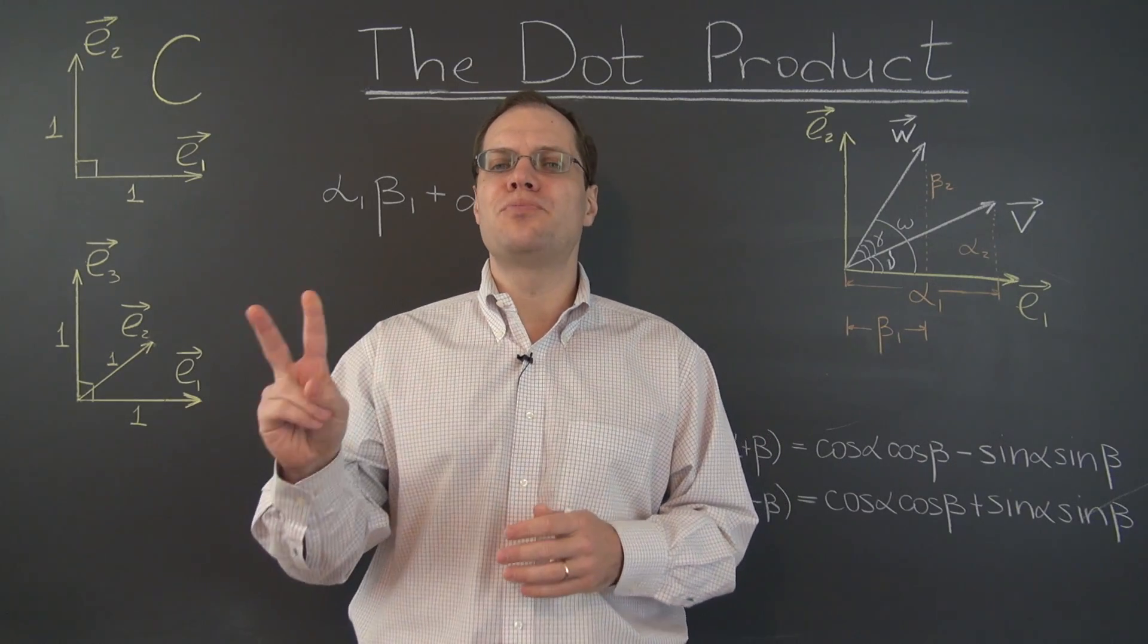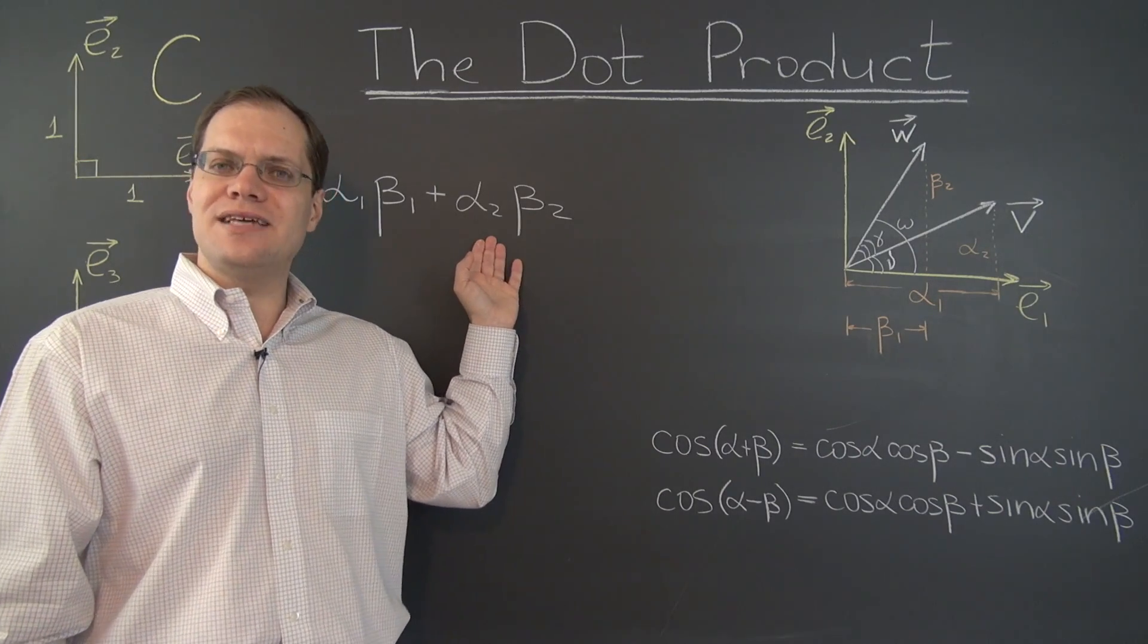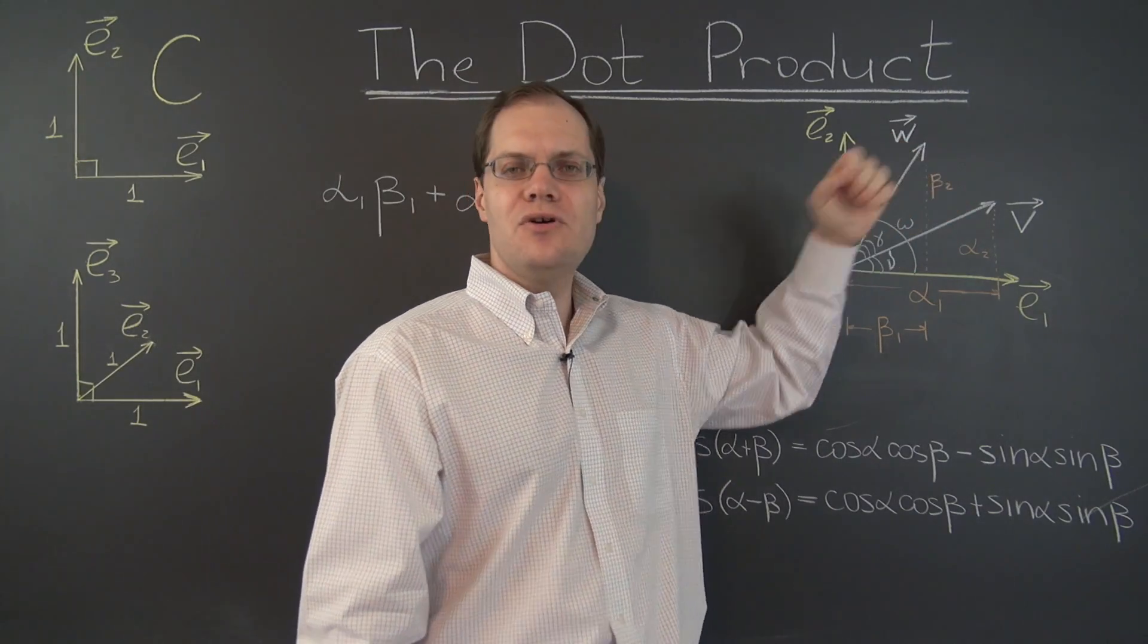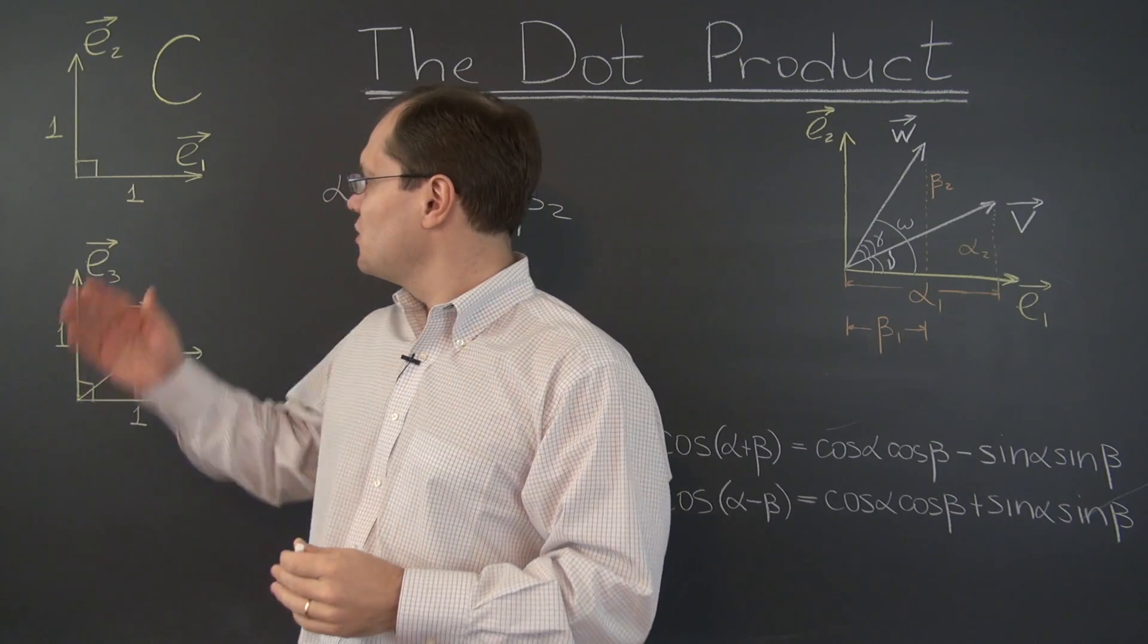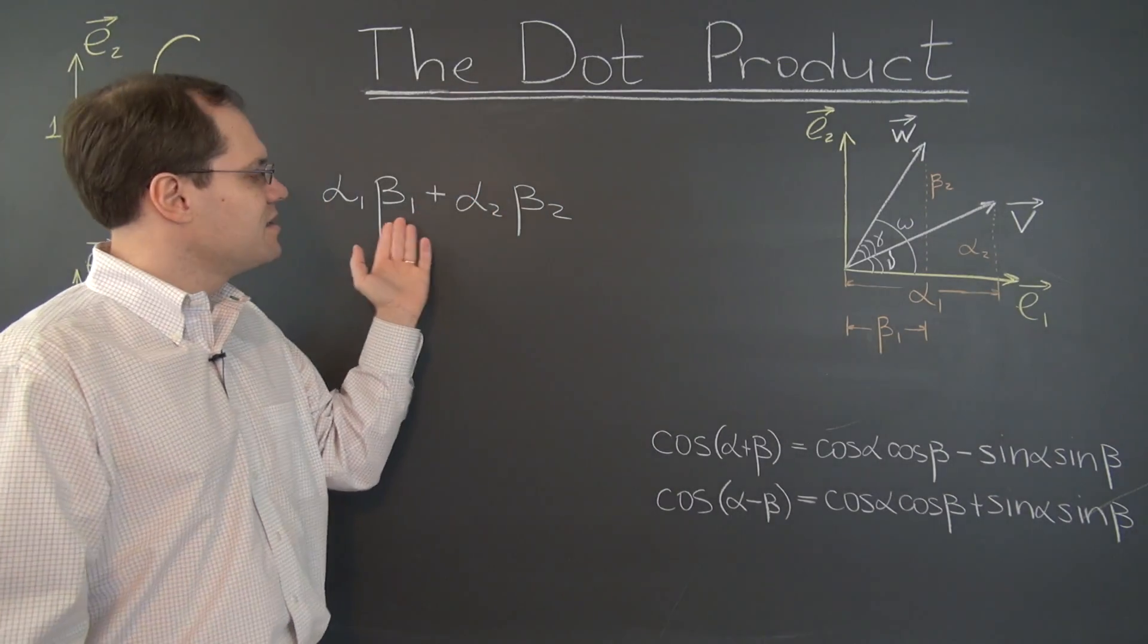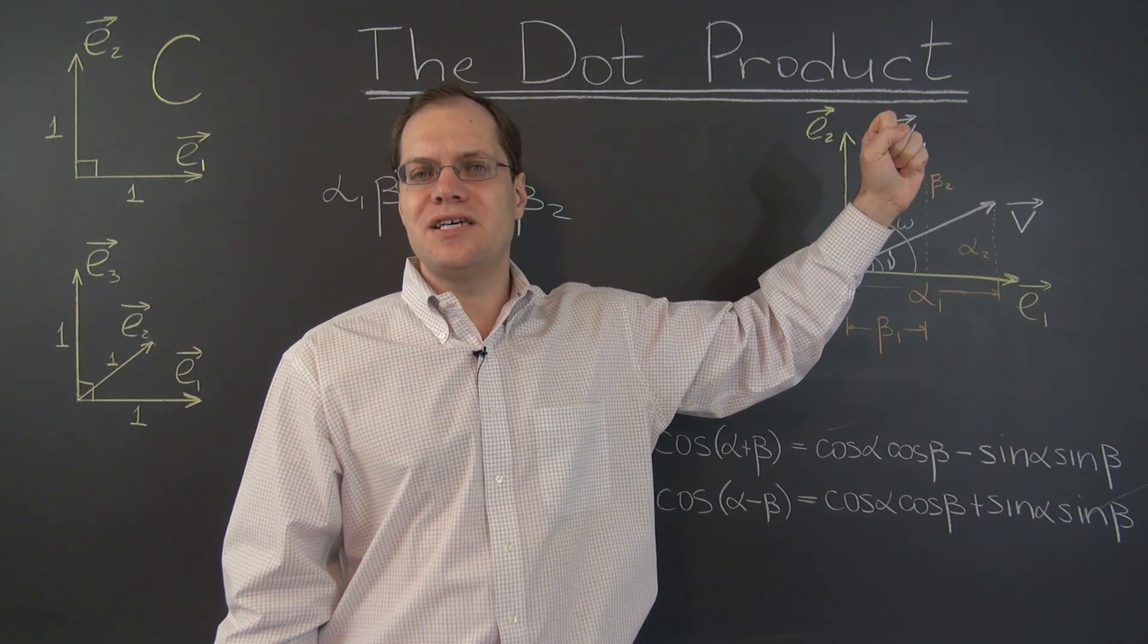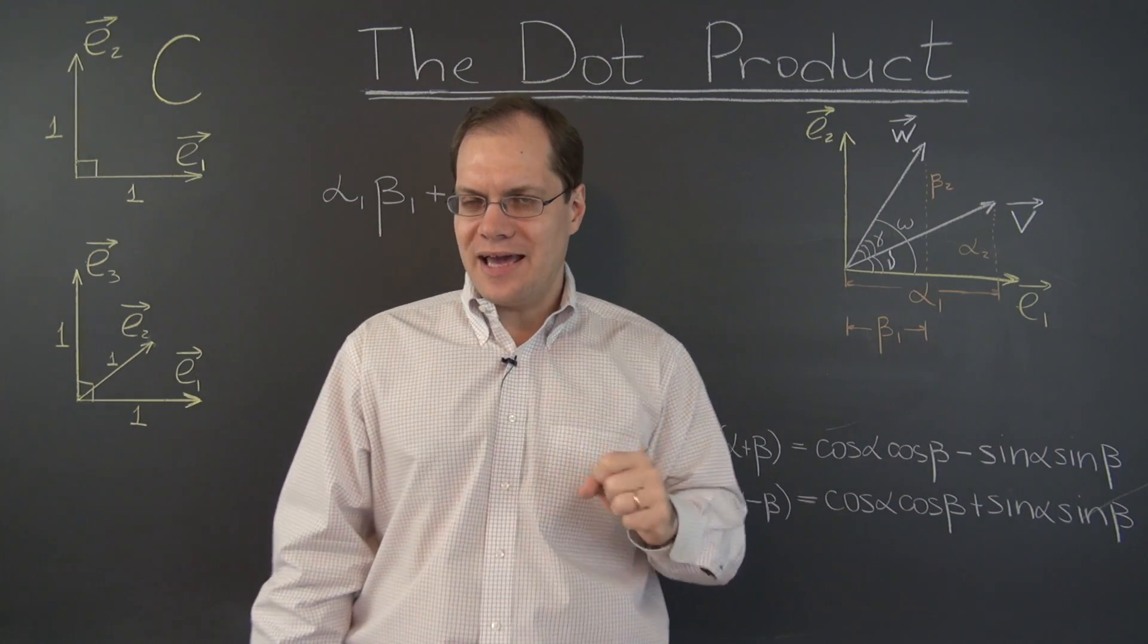In this video, we'll present two proofs for the fact that this formula actually represents the dot product of vectors v and w in terms of their components with respect to a Cartesian basis. That is, this expression equals the length of v times the length of w times the cosine of the angle between them.